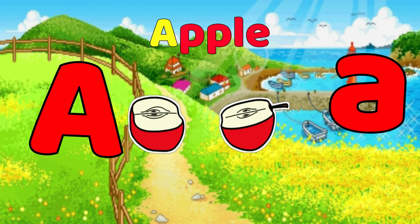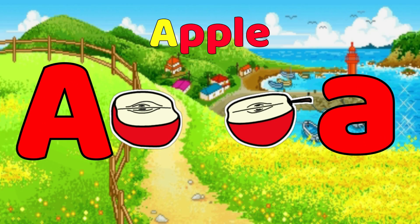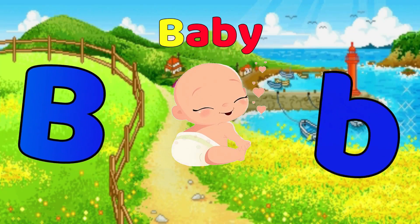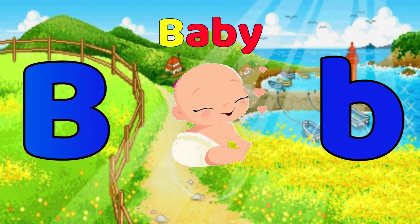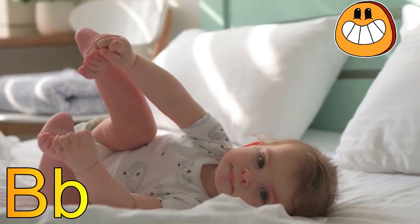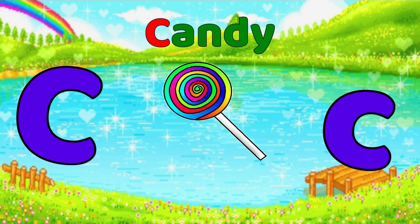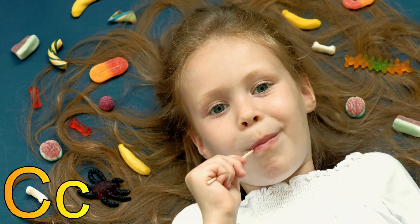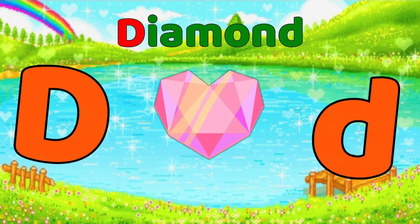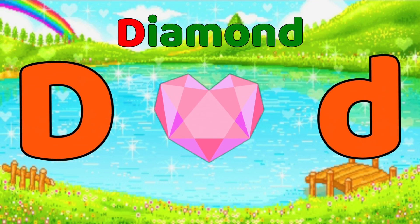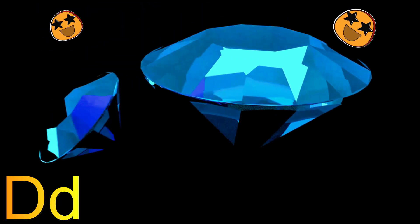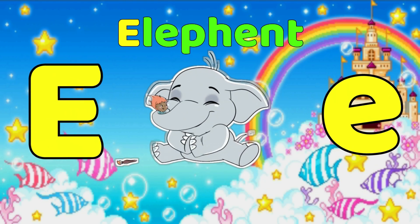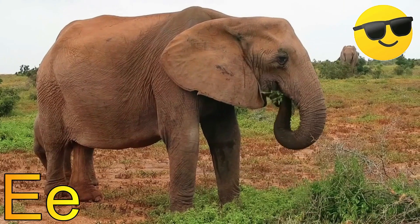A is for Apple, A-A-Apple, A-Apple. B is for Baby, B-B-Baby, B-Baby. C is for Candy, C-C-Candy, C-Candy. D is for Diamond, D-D-Diamond, D-Diamond. E is for Elephant, E-E-Elephant, E-Elephant.